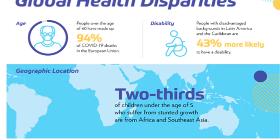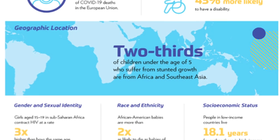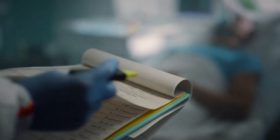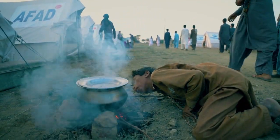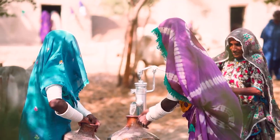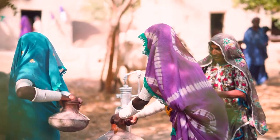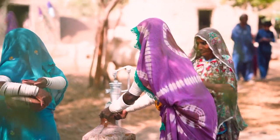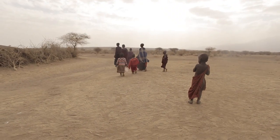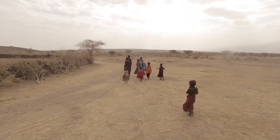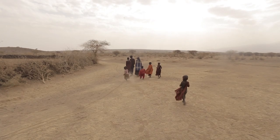Here are some of the highlights of the Global Health Disparities Report. People over the age of 60 made up 94% of COVID-19 deaths in the European Union. People with disadvantaged backgrounds are 43% more likely to have a disability. Girls in sub-Saharan Africa contract HIV at a rate three times that of boys. African American babies are twice more likely to die as babies of other races.